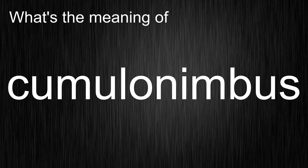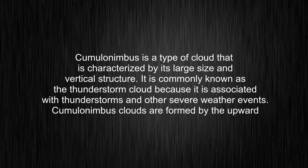What's the meaning of cumulonimbus? Cumulonimbus is a type of cloud that is characterized by its large size and vertical structure. It is commonly known as the thunderstorm cloud because it is associated with thunderstorms and other severe weather events.